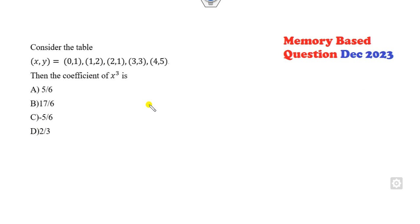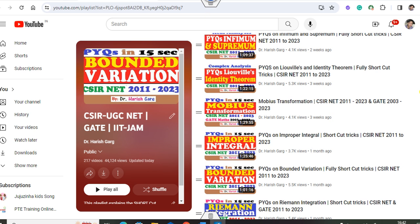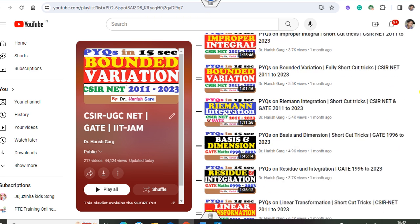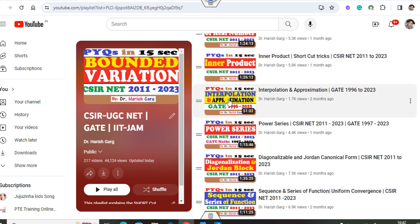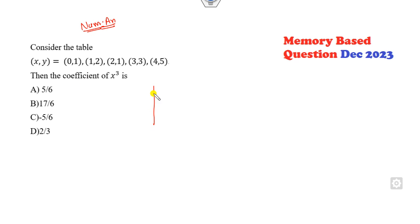Now look at this next question. This question is related to numerical analysis. I have given numerical tips related to interpolation — you can see the lecture on interpolation. So what do we do? As I told you, write it in table form. The values are: x = 0, 1, 2, 3, 4 and f(x) = 1, 1, 2, 3, 5.